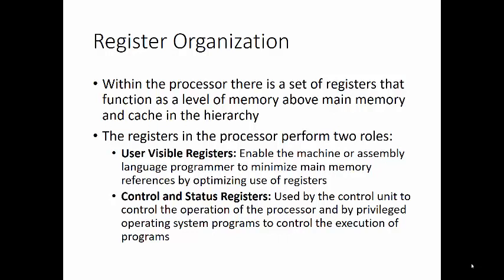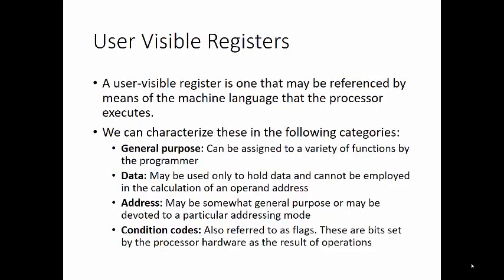It's not necessarily a clean separation into these two categories. For example, on some machines, the program counter is user-visible, such as on the X86 architecture. But on many, it's not. Let's talk about the user-visible registers first. A user-visible register is one that may be referenced by means of the machine language that the processor executes.